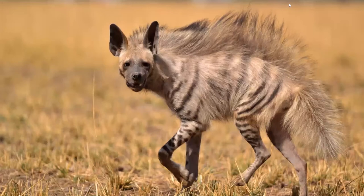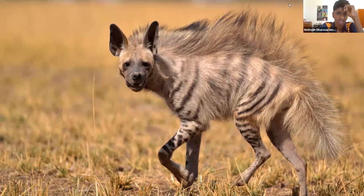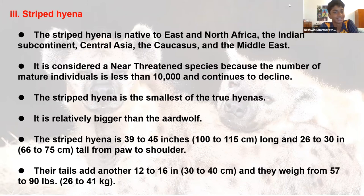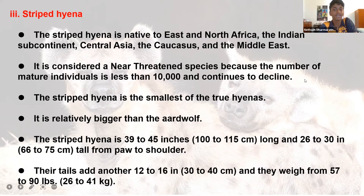The striped hyena — you can pronounce it either way — is native to East and North Africa, the Indian subcontinent, Central Asia, the Caucasus Mountains, and the Middle East. It is considered a near-threatened species because the number of mature individuals is less than 10,000 and continues to decline.